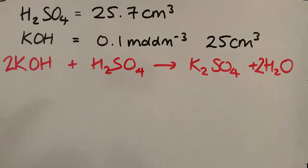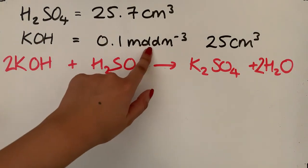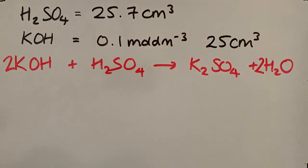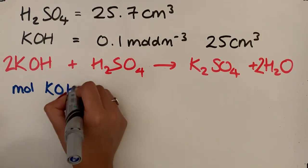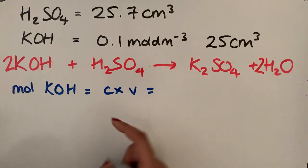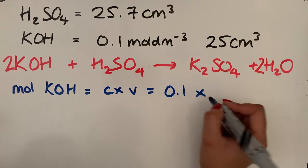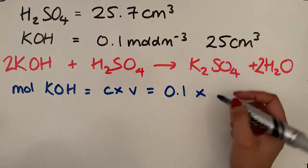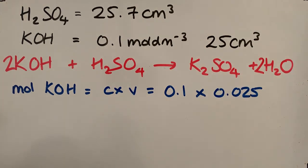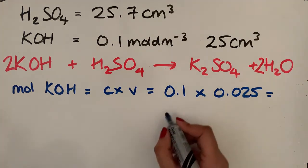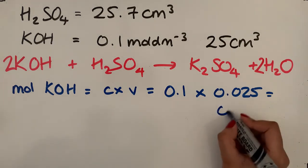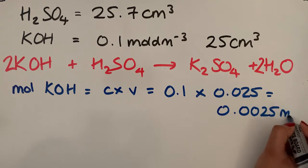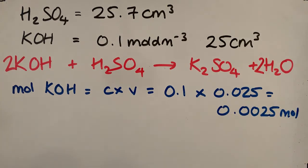The first step is working out the moles of the substance whose concentration we know — that's our potassium hydroxide. We have the concentration and the volume, so: moles of KOH = concentration × volume = 0.1 × (25 ÷ 1000) = 0.1 × 0.025 = 0.0025 moles. Those are the moles of potassium hydroxide.